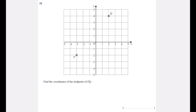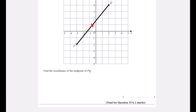Question fifteen: find the coordinates of the midpoint of PQ. From the y-values, halfway between −2 and 4 is 1. For the x-values, it's halfway across — 2.5 on each side. So the midpoint coordinates are (−0.5, 1).